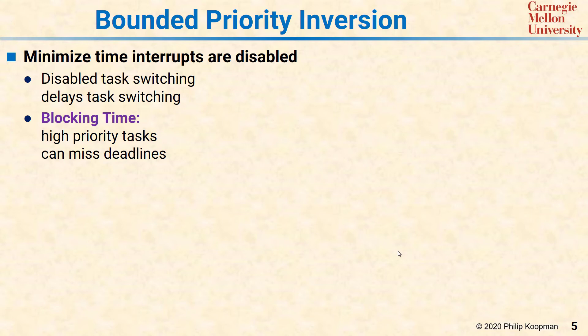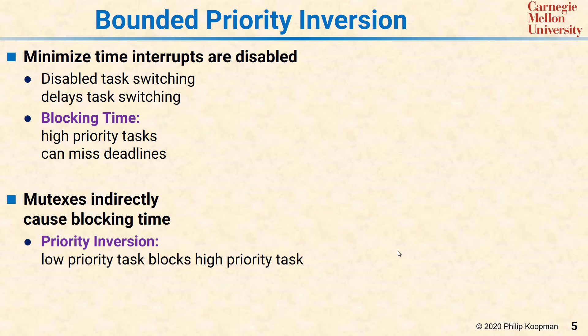You might say, well, mutexes re-enable interrupts right away. Yes, but the problem is that the higher priority tasks that might want that same variable are going to see the mutex taken, and they're going to have to wait for the mutex to be released. So it's just like waiting for interrupts to be re-enabled, except it only affects the other tasks sharing the particular shared variable. The result in either case is priority inversion — when a low priority task blocks high priority tasks by tying up the CPU or tying up a shared resource.